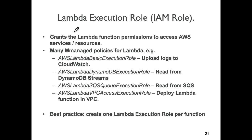The lambda execution role's purpose is to grant the lambda function permission to access other services. IAM is structured around roles, policies, and permissions — you attach a policy to a role and the policy states what permissions are associated with that role. There are predefined managed policies that AWS created for convenience, specifically related to the lambda service. The very first one — AWSLambdaBasicExecutionRole — every lambda function has to have this associated with it.